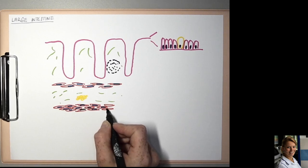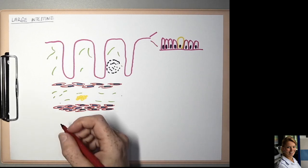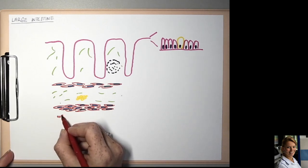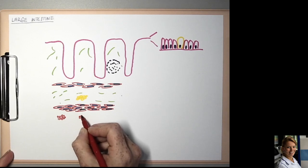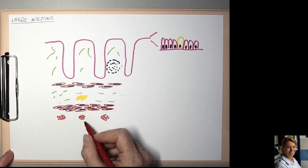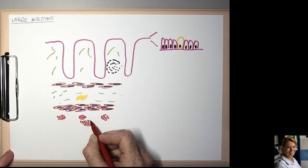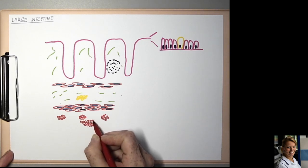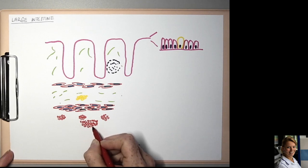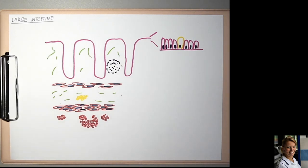And the longitudinal layer is very thin apart from the three places where it is thickened to form the teniae coli which are visible on the colon by the naked eye. So this is the longitudinal layer. Smooth muscle cells in the cross section and here is the teniae coli, thickened part of the longitudinal layer. And nuclei.